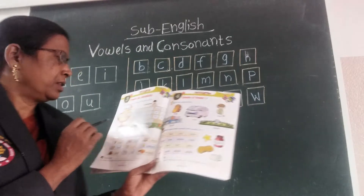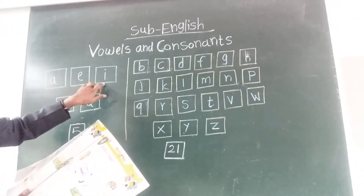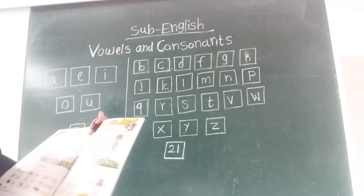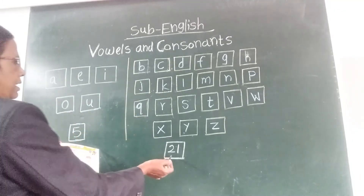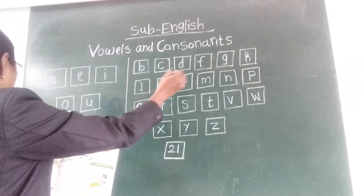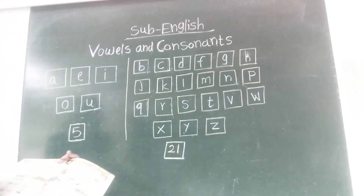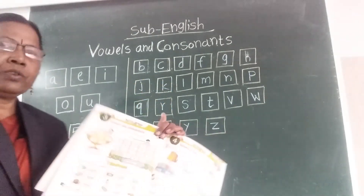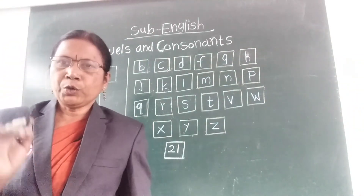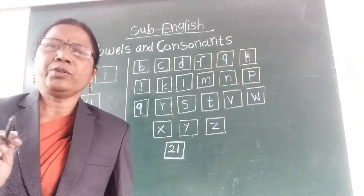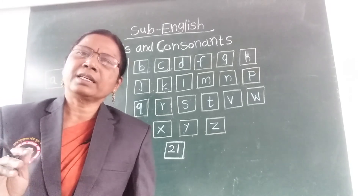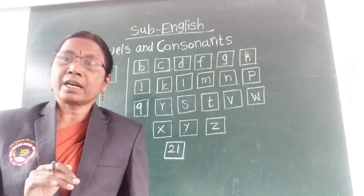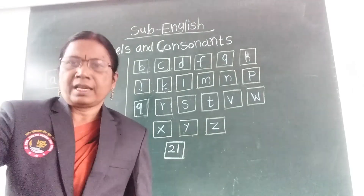The five vowels are A, E, I, O, U. And there are 21 consonants. So students, you have to write A to Z letters in your four-line notebook every day. In this video we will read every day — you will read your monthly writing notes and study guides. Thank you.